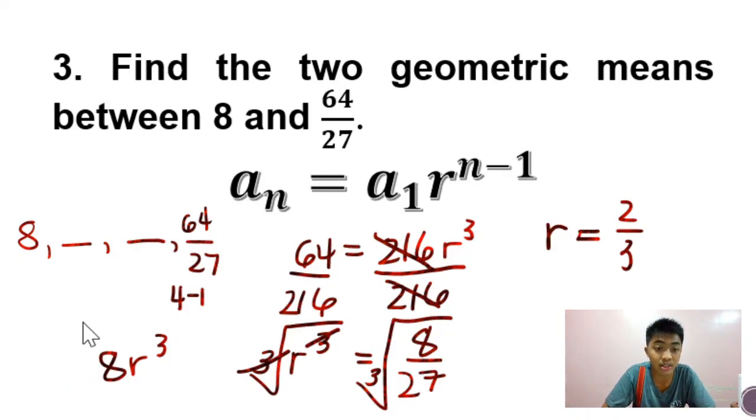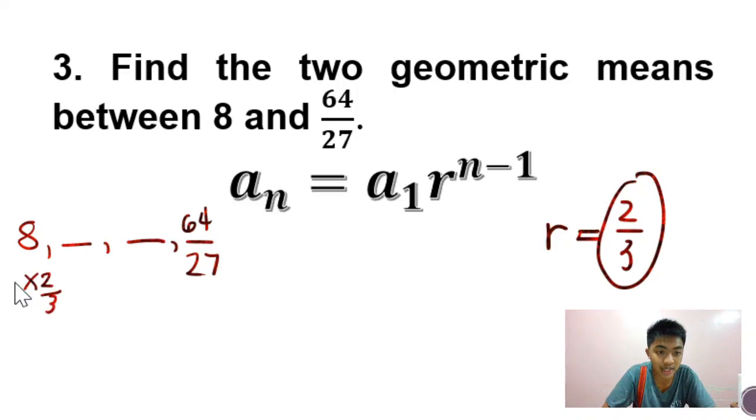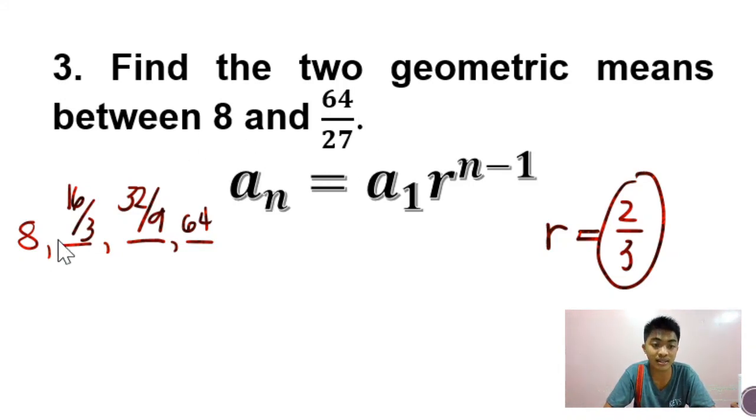So now naalam na natin yung common ratio, we can already multiply this to the first term para makuha natin yung next term. So 8 times 2 thirds is 16 over 3, and 16 over 3 times 2 thirds is 32 over 9. So the 2 geometric mean between 8 and 64 over 27 are 16 over 3, and 32 over 9.